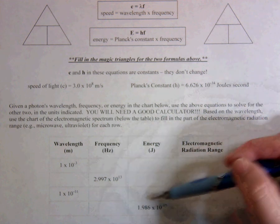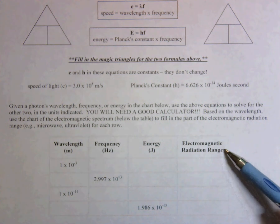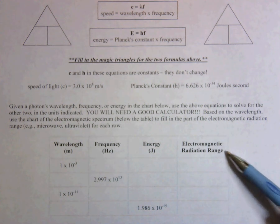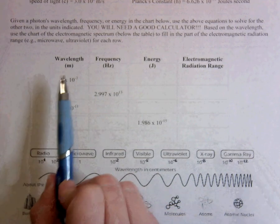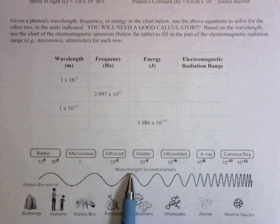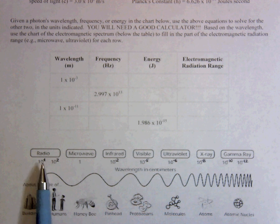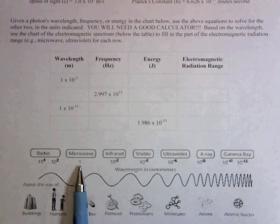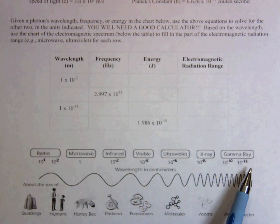Once you have all these blanks filled in, then it just asks you to figure out which electromagnetic radiation range these different waves would be in. And you're always going to look at the wavelength to determine this. So you can see down here, it gives you the wavelength of these different waves. And so it gives you that radio waves are 10 to the fourth to 10 to the second range. Microwaves are in about the one meter range, and so on. So it's giving you these different wavelengths.